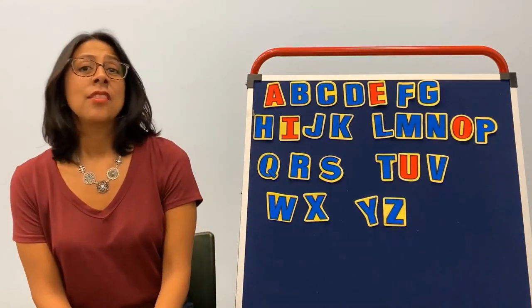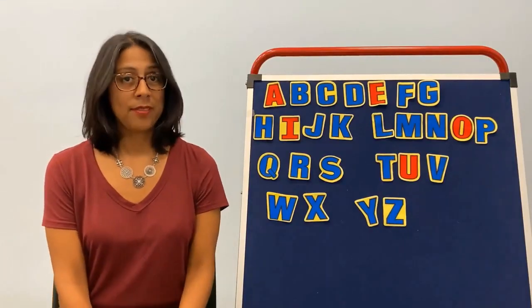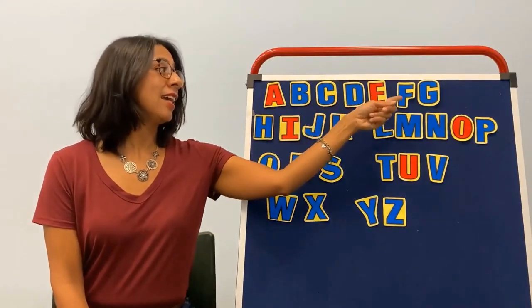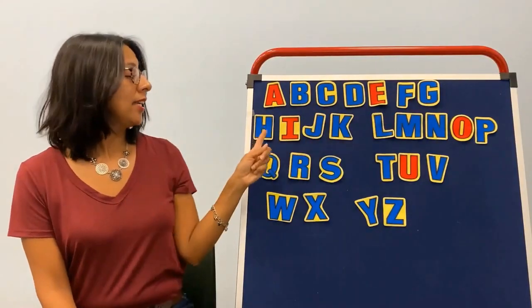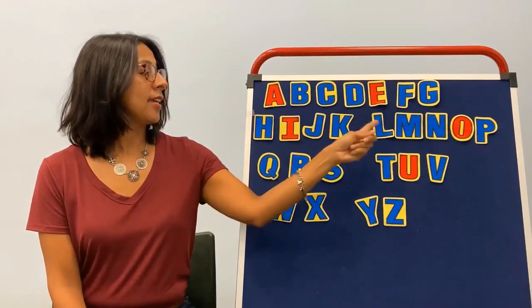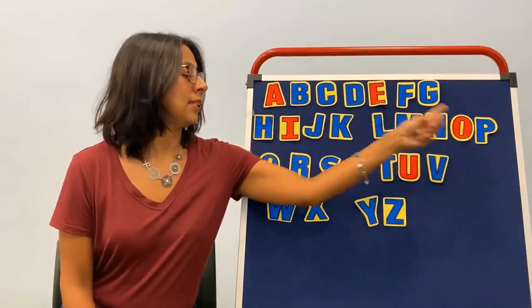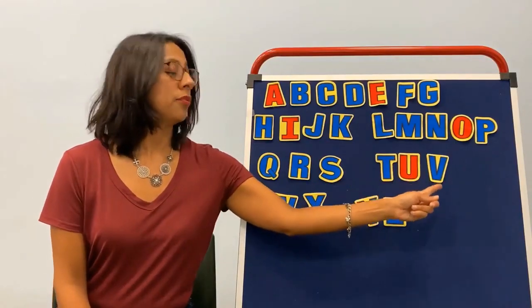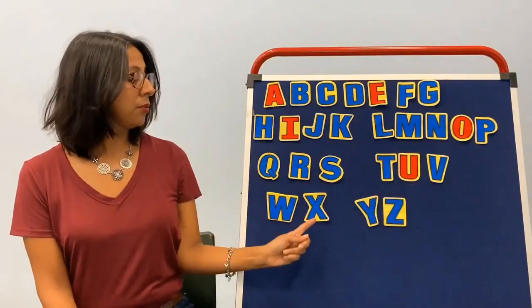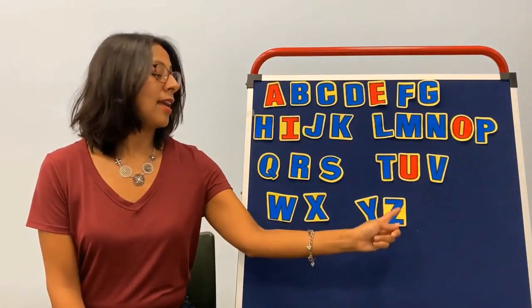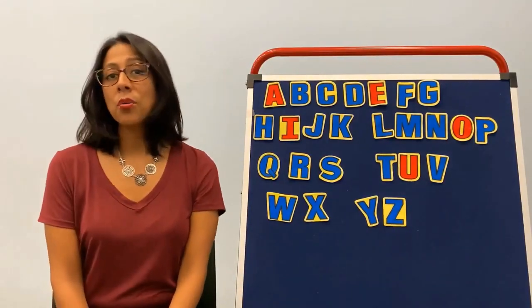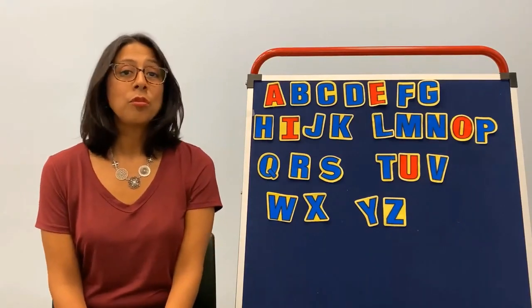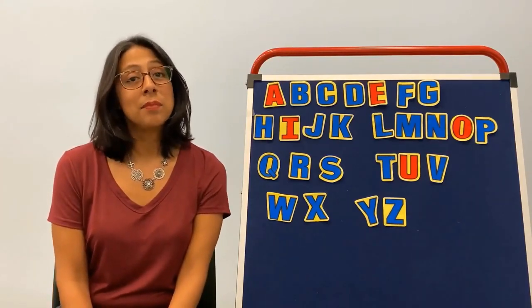Sing the alphabet the way that you are familiar with. Here we go. A, B, C, D, E, F, G, H, I, J, K, L, M, N, O, P, Q, R, S, T, U, V, W, X, Y, and Z. Now I know my ABCs. Next time won't you sing with me?